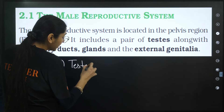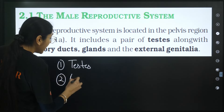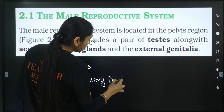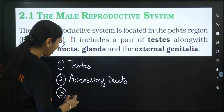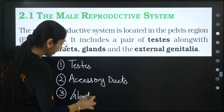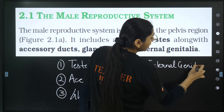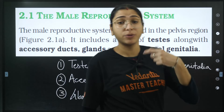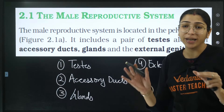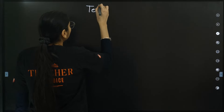Now let's start with the male reproductive system. In the male reproductive system we will talk about the testis, which are the primary male sex organs. We will discuss the accessory ducts associated with them, the glands associated with them, and the external genitalia through which release of gametes takes place. These are the four major parts of the male reproductive system.